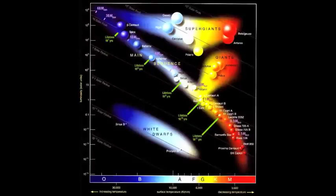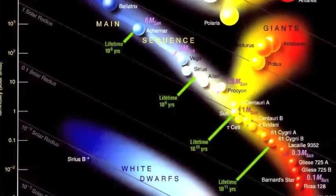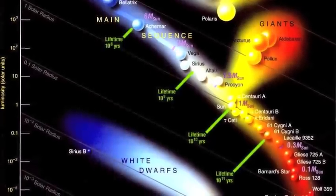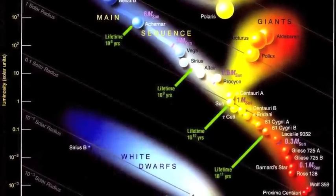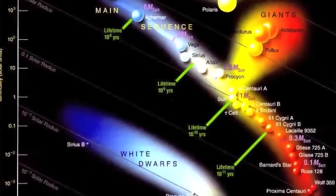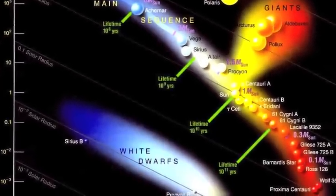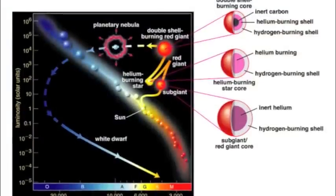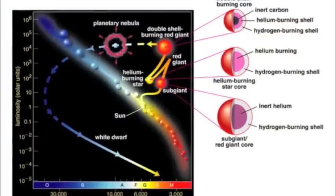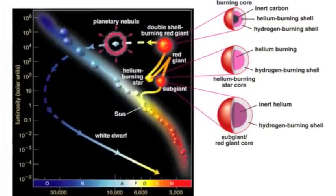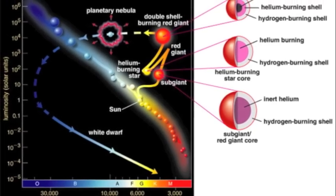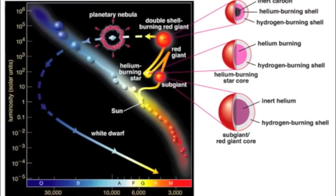This is called the HR diagram. It shows different types of stars. Our Sun is a medium-sized star, so it is located in the middle of this diagram. In this version of the HR diagram, the course the Sun will take at the end of its lifetime is shown.